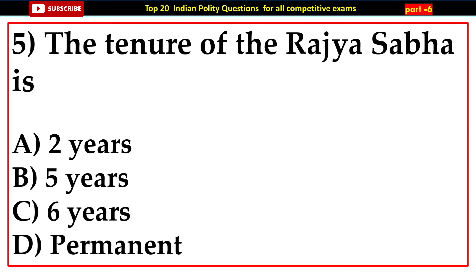Question number five: The tenure of the Rajya Sabha is — options: A) Two years, B) Five years, C) Six years, D) Permanent. Answer: D) Permanent.